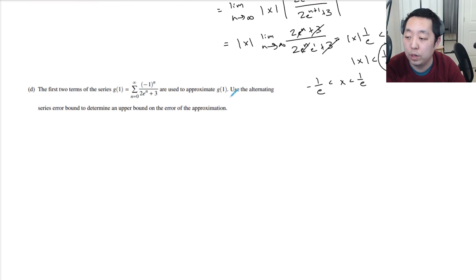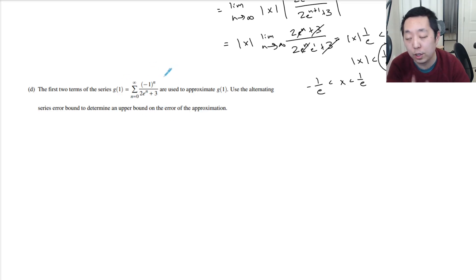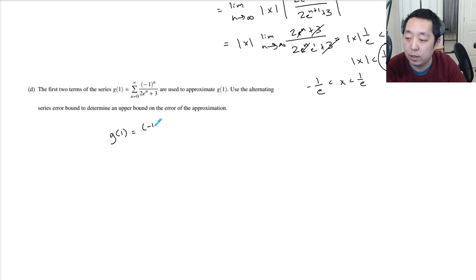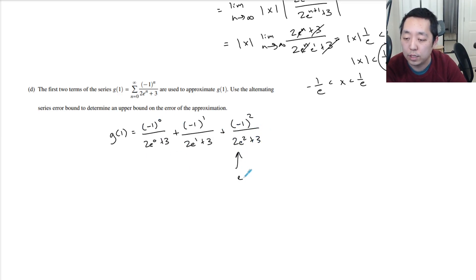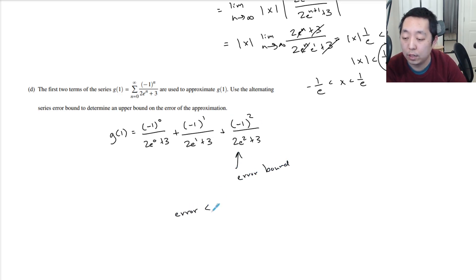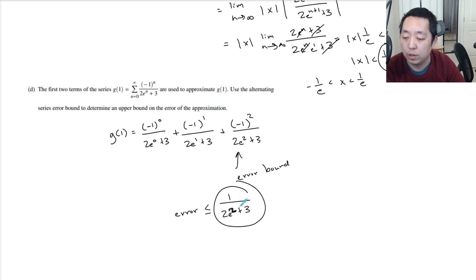The first two terms of the series are used to approximate g of 1. Use the alternating series error bound to determine the upper bound on the error of the approximation. If we look at the first two term series, the third term tells you the upper error bound. Plugging in n equals 0, 1, and 2: the third term (n=2) without the negative 1 squared gives the error bound. So your error is less than or equal to 1 over 2e squared plus 3. That is an upper bound on the error of the approximation for an alternating series.